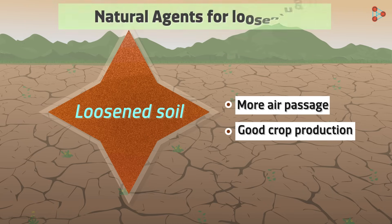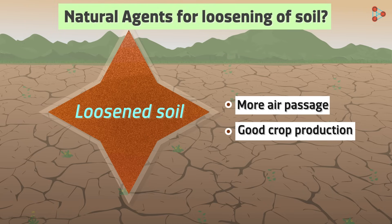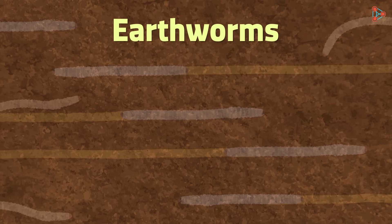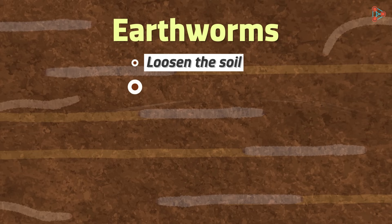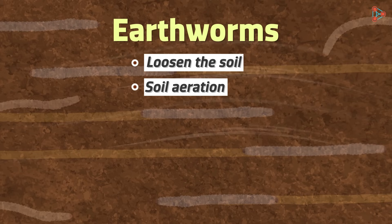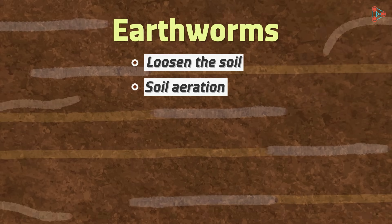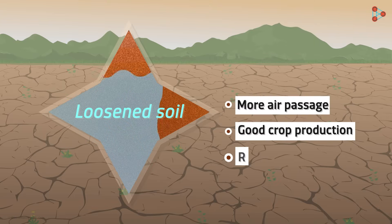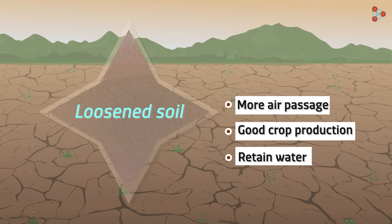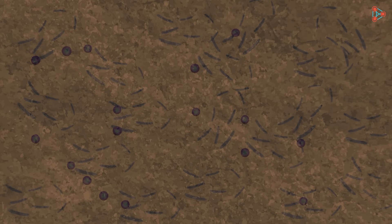Do you know any natural agents that help this process? We usually refer to them as friends of the farmers — the answer is earthworms. They help loosen the soil and also aid in soil aeration. Loosening of soil also helps the soil to retain water, which leads to the growth of favourable microbes that help to produce humus in the soil.